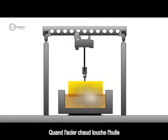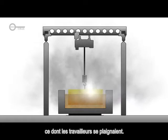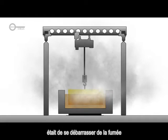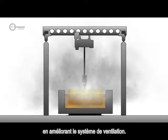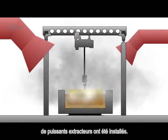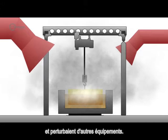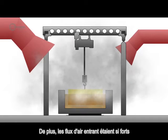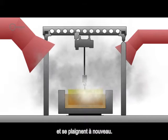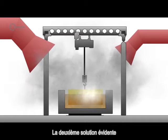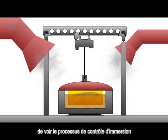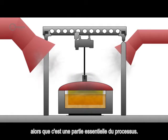When hot steel touches oil, it burns and makes a lot of smoke, which the workers were complaining about. The first obvious solution was to get rid of the smoke by improving the ventilation system. Large exhaust ventilation pipes were installed, but these were bulky and affected the work of other equipment. Also, drafts from air intakes were so strong that workers would get cold and again complain. The second obvious solution was to close the bath with a lid, however this prevented the crane operator from seeing the submerging process, and careful control of this was essential.